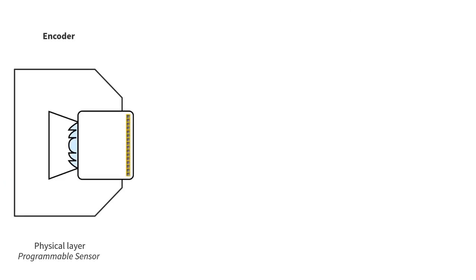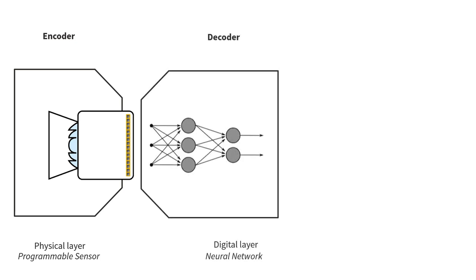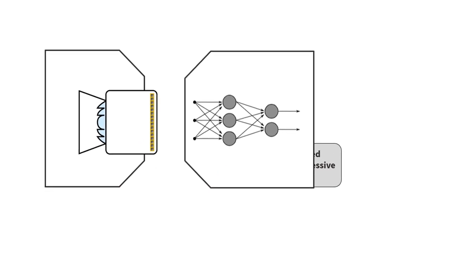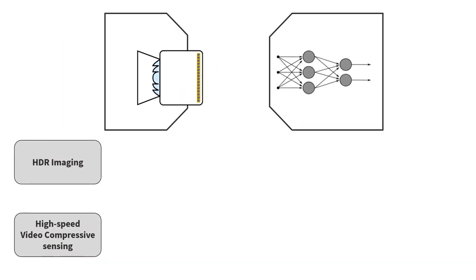In this work, we propose to learn optimal pixel exposures to alleviate these two problems. We propose an end-to-end optimization framework in which a programmable sensor acts as an encoder of the scene irradiance, and a neural network acts as a decoder to reconstruct both HDR images and high-speed videos. The learning of the pixel exposures in the sensor, as well as the parameters of the decoder, is performed jointly, given an application-specific loss.